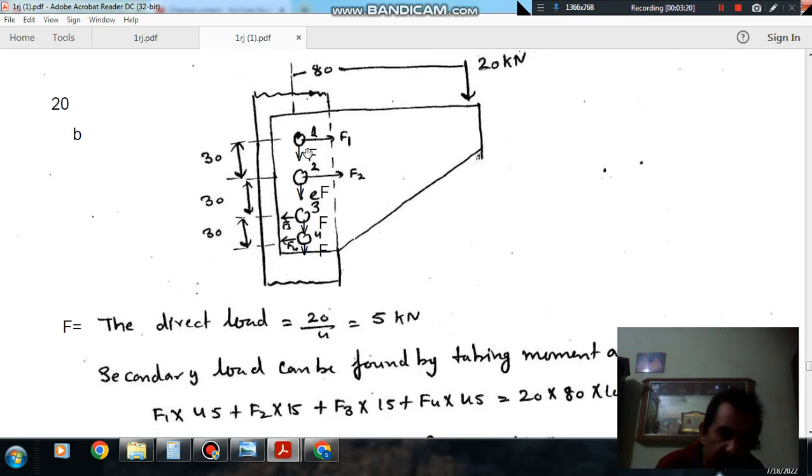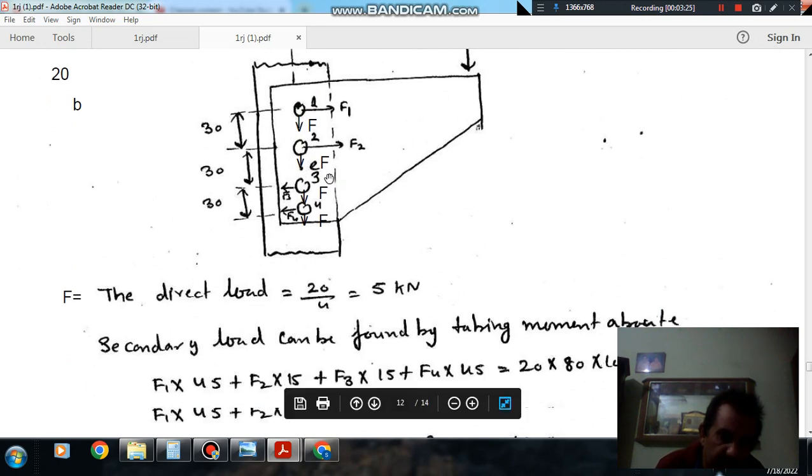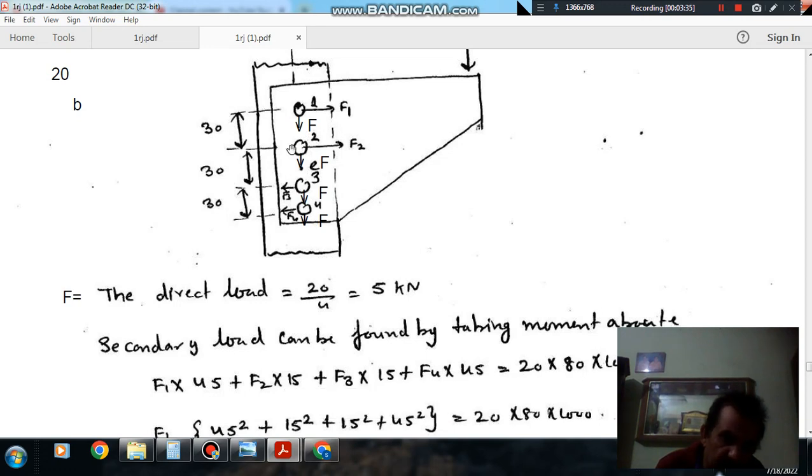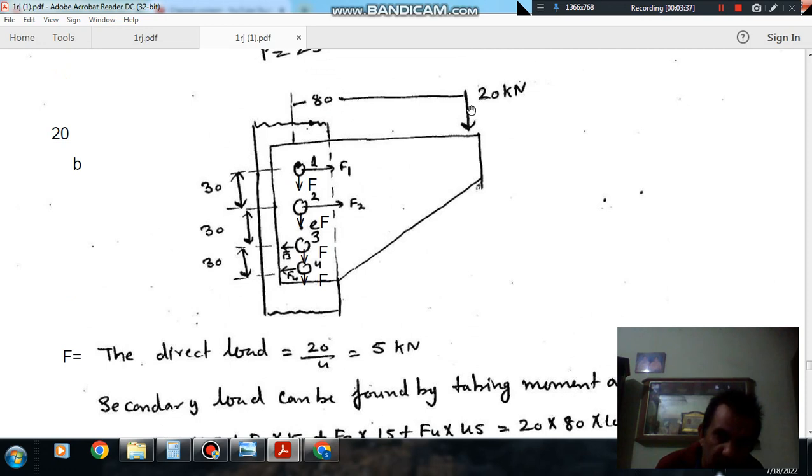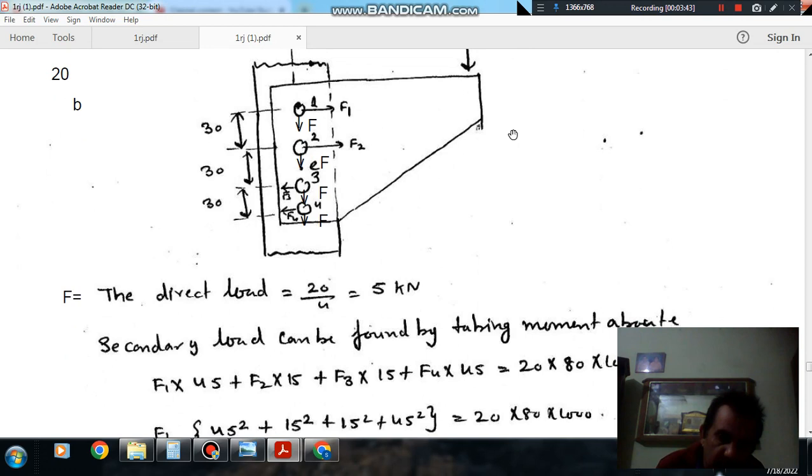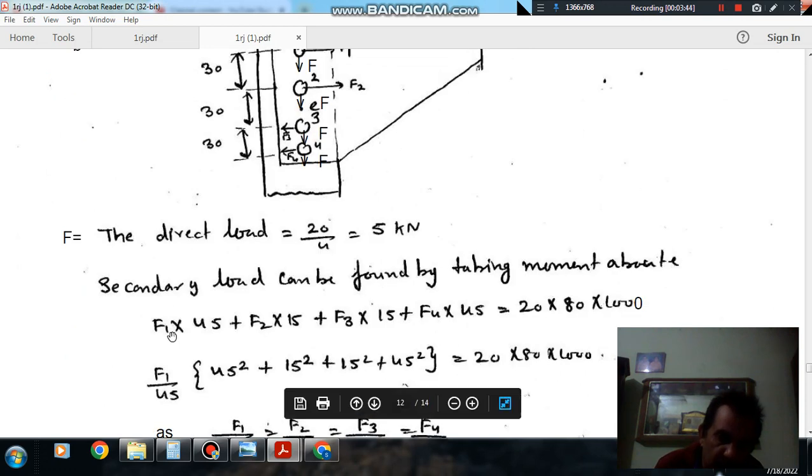So now if we take a moment about center, then it will be F1 into 45, F2 into 15, F3 into 15, and F4 into 45. As it is causing local moment, this local moment should be equal to this local moment. So that local moment is 20 into 80 or into 1000. So this is the equation of moment: F1 into 45 plus F2 into 15 plus F3 into 15 plus F4 into 45 is equal to 20 into 80 into 1000.